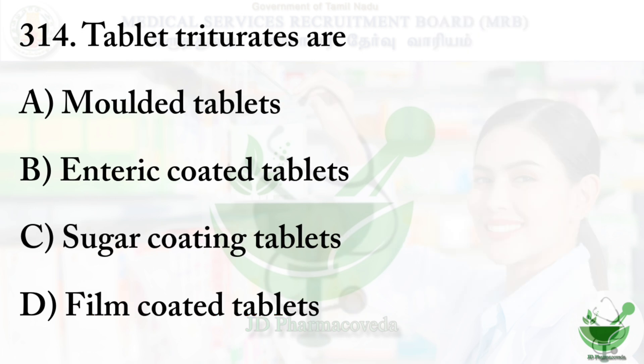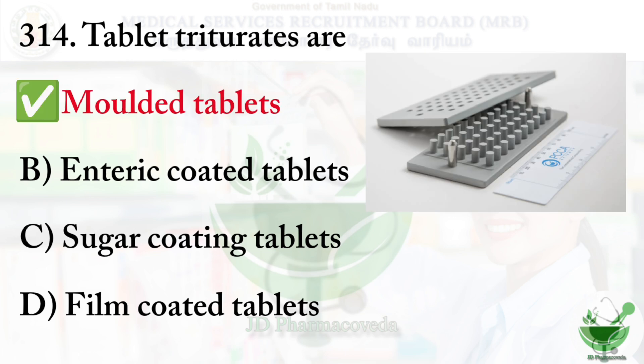Question number 314: Tablet triturates are? Option A: molded tablets, Option B: enteric coated tablets, Option C: sugar coating tablets, Option D: film coated tablets. The correct answer is Option A, molded tablets. Tablet triturates are molded tablets that quickly disintegrate in the presence of moisture. They are prepared by placing moistened powder into a die and pressing, and may contain lactose, powdered sucrose, and a moistening agent.